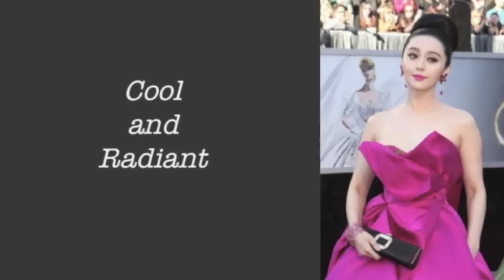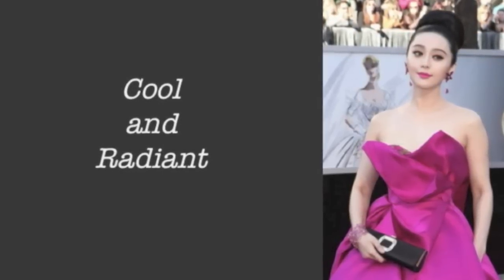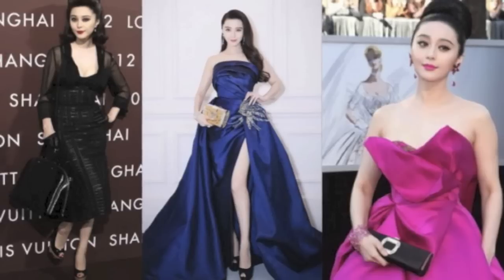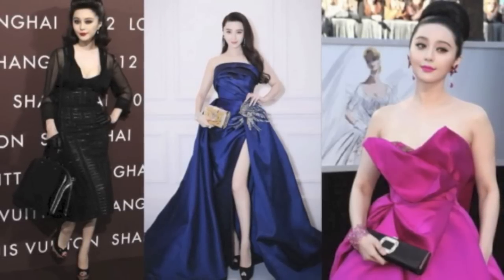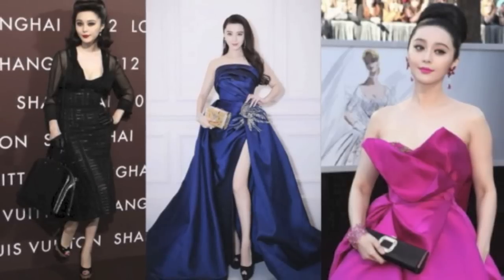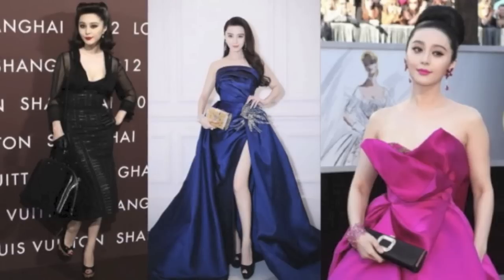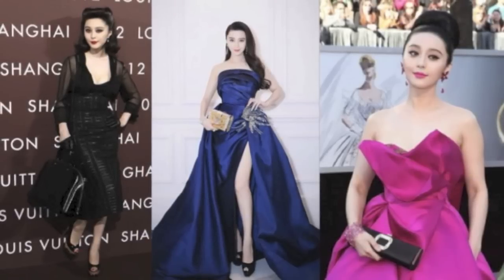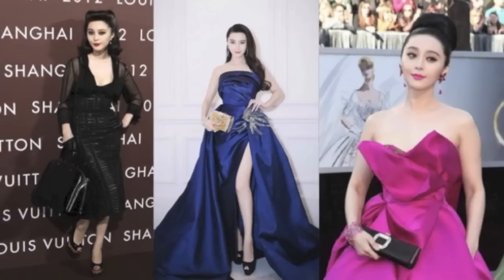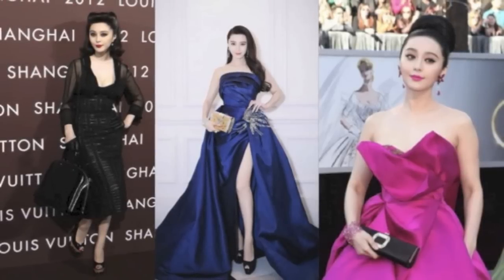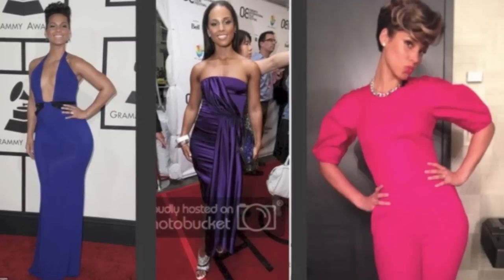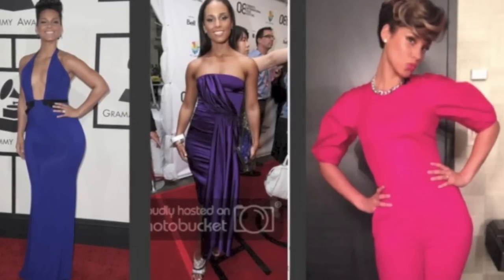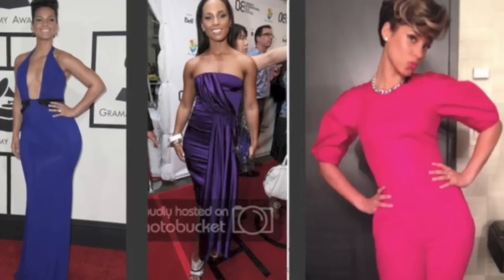Now we have cool and radiant — these ladies have the coolest undertones, just as warm and radiant are the warmest. They have a lot of blue in their skin. Fan Bingbing looks amazing in royal blue, magenta, and pure black because her skin undertone is very cool and very radiant. I did a more in-depth color analysis on all these cool and radiant ladies in my ethnicity and color analysis video, so I'll link that below. Next up, Alicia Keys — same story. Her best colors are still cool and radiant: purple, royal blue, and magenta.